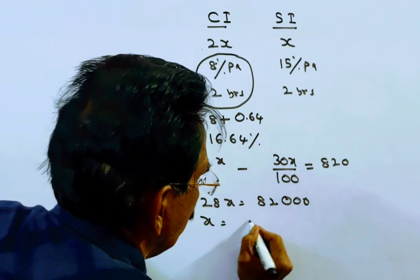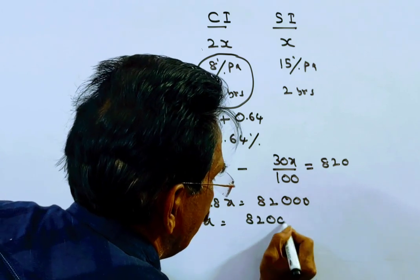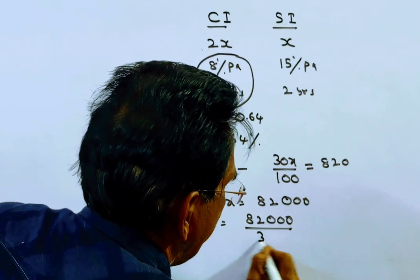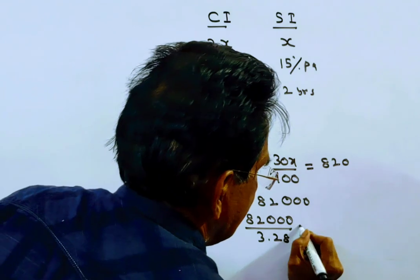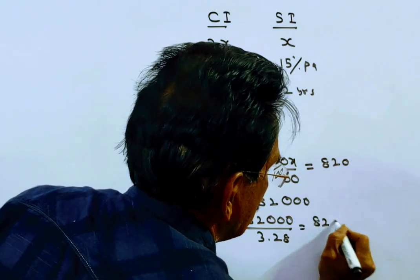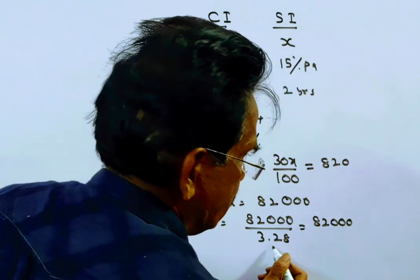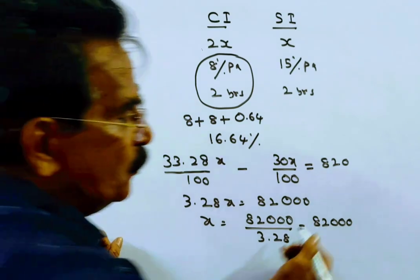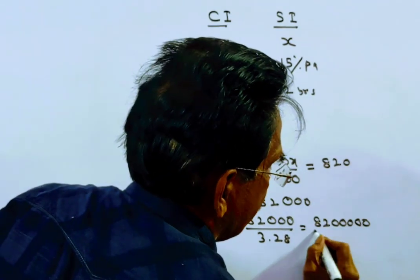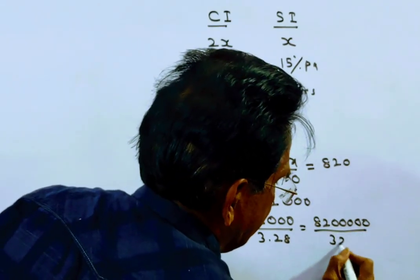X equals 82,000 over 3.28. I am removing this decimal point, so I am putting 2 zeros, making it 8,200,000 by 328.